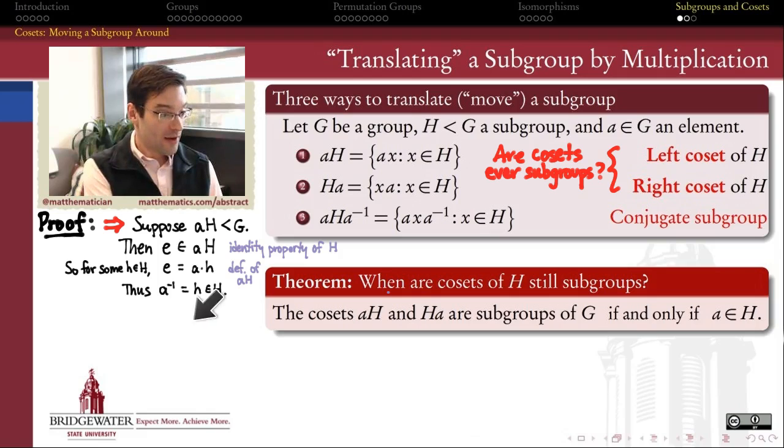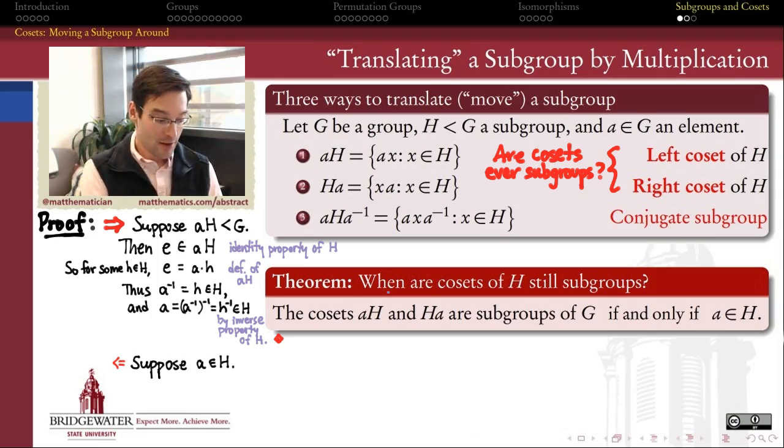So what does that tell me? That tells me that A inverse also belongs to H. Why? Because H belongs to H by assumption, right? And A inverse is equal to H. On the other hand, A is the inverse of A inverse. So once I know that A inverse belongs to H, by the inverse property of groups, the inverse of A inverse must belong to H also. So by the inverse property, we see that A belongs to H. So if I know that the left coset is a subgroup of G, then I know that A must have belonged to H in the first place. That's the forward direction. We've proved it for left coset, the proof for right cosets is analogous.